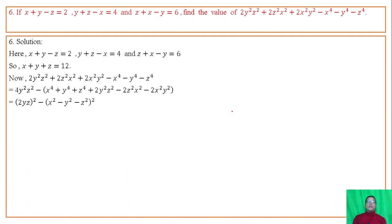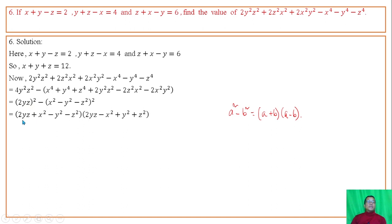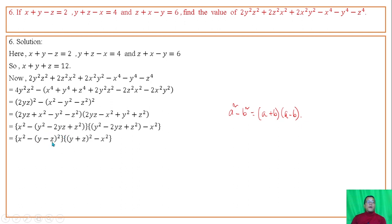Applying the factorization a squared minus b squared equals (a plus b)(a minus b), we factor further. The first bracket becomes twice yz plus the factor, and the second bracket twice yz minus that factor. Simplifying, y squared z squared terms group together, giving (y minus z) squared and (y plus z) squared forms.